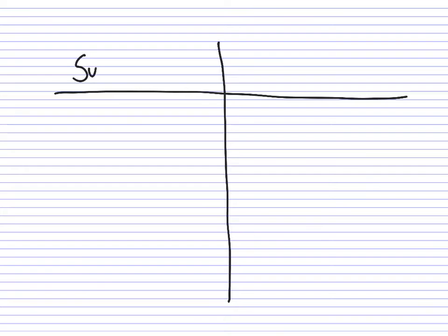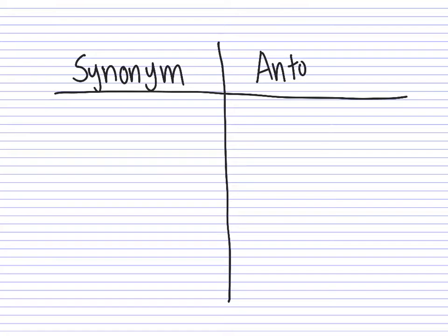To do this, 6th graders, today I'm going to write a T-chart — synonyms and antonyms. Synonyms: S-Y-N-O-N-Y-M. And antonyms: A-N-T-O-N-Y-M.